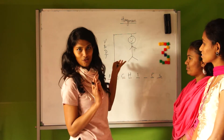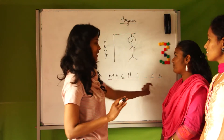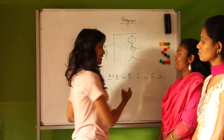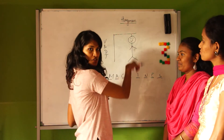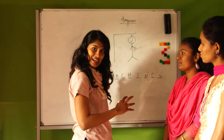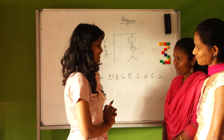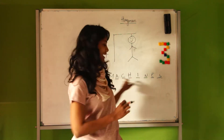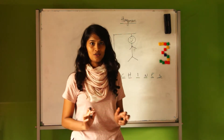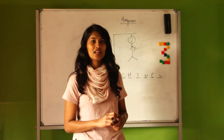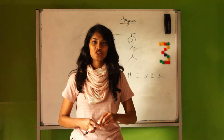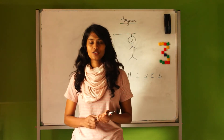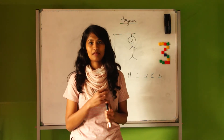Now you draw the complete person and the man is hung. Once the man is hung, you don't get any more chances and the student has not guessed the correct word — you then tell them the answer is 'machines.' If the whole person is not drawn and they get the entire word before that, they win the game. For longer words, you can give general clues — like this word is from the chapters — but not very specific clues. This is the second part of the main creation: the game Hangman.